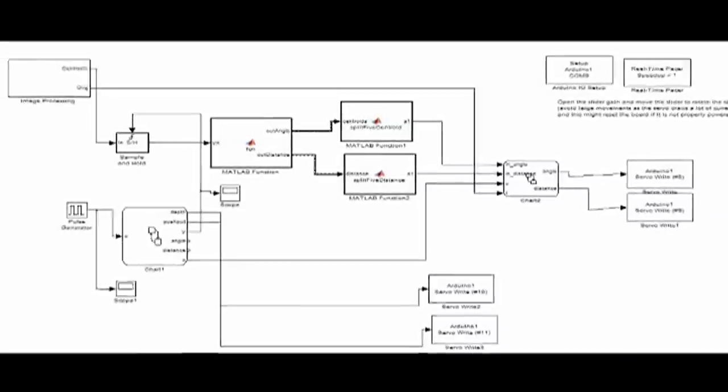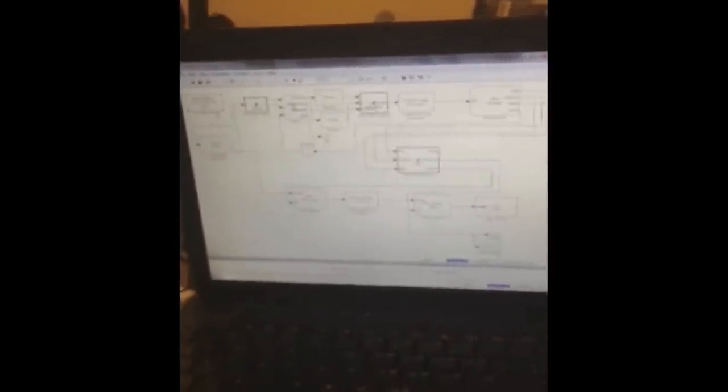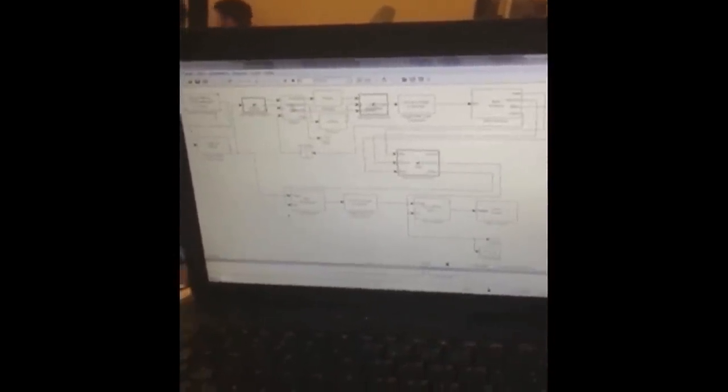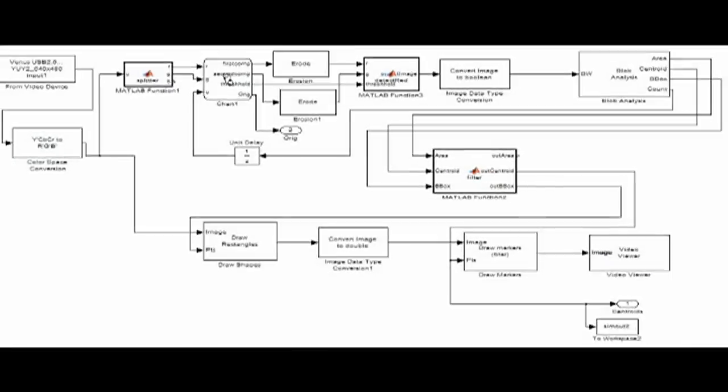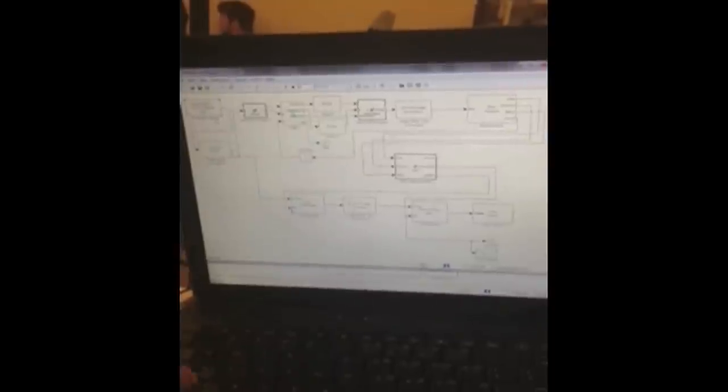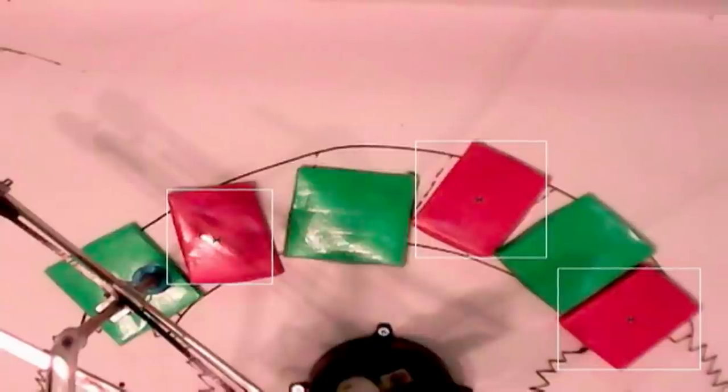The control system of the robotic arm was modeled and implemented using Simulink and MATLAB. We use Simulink because it allows us to visualize the control system and simplify the programming.